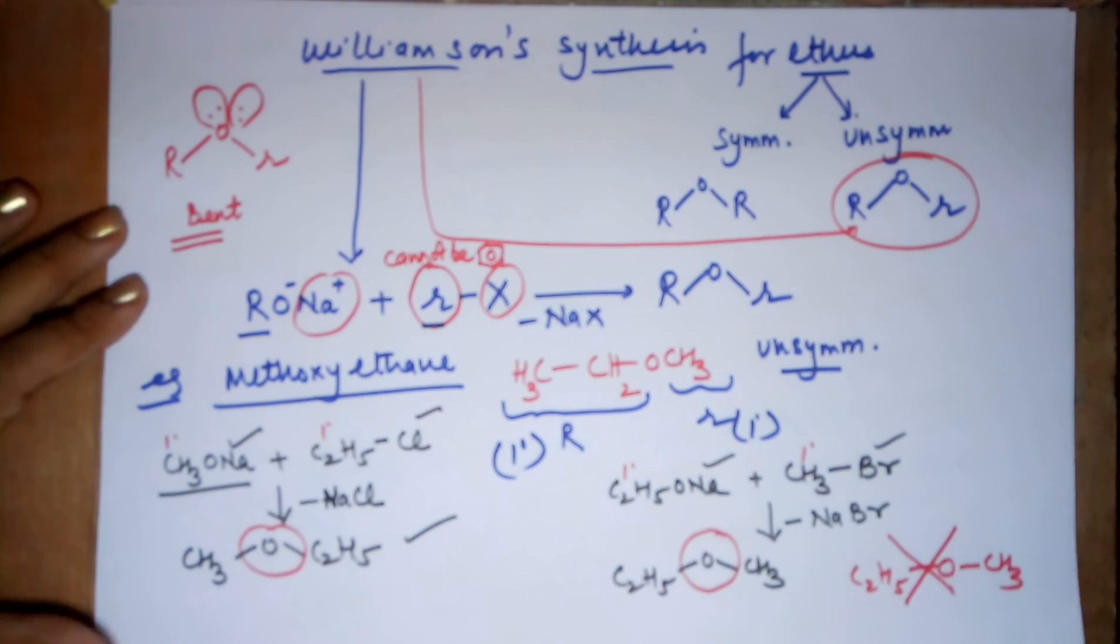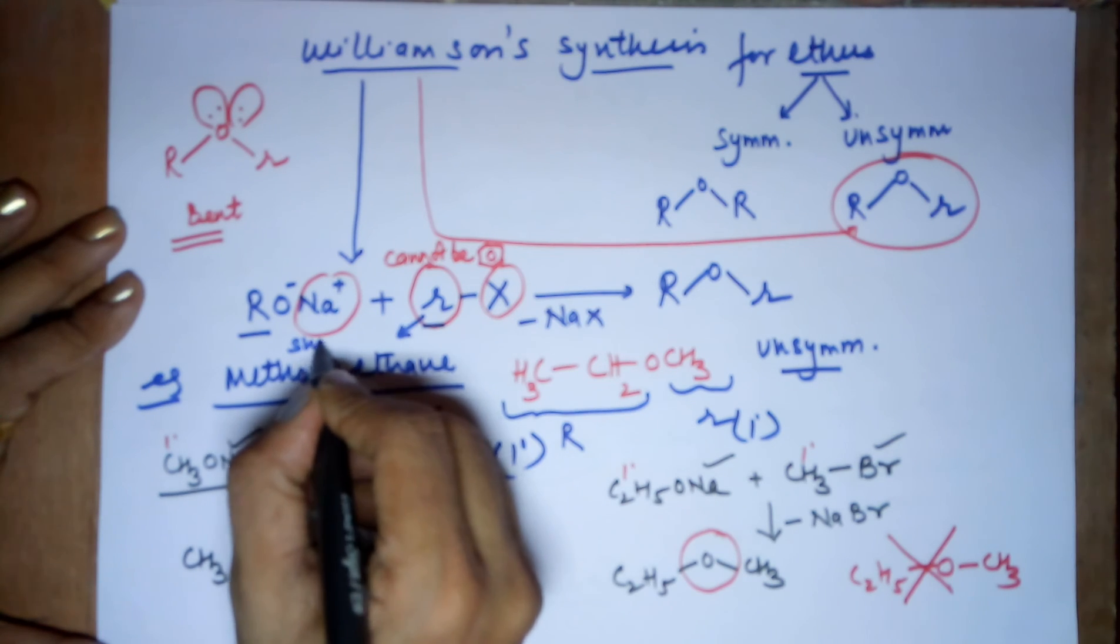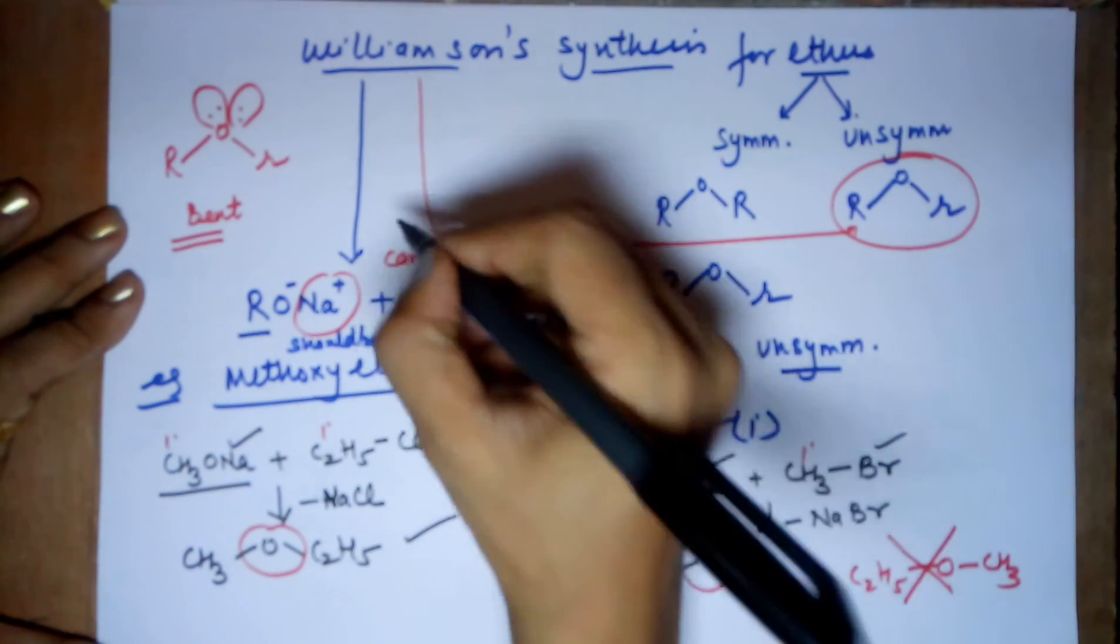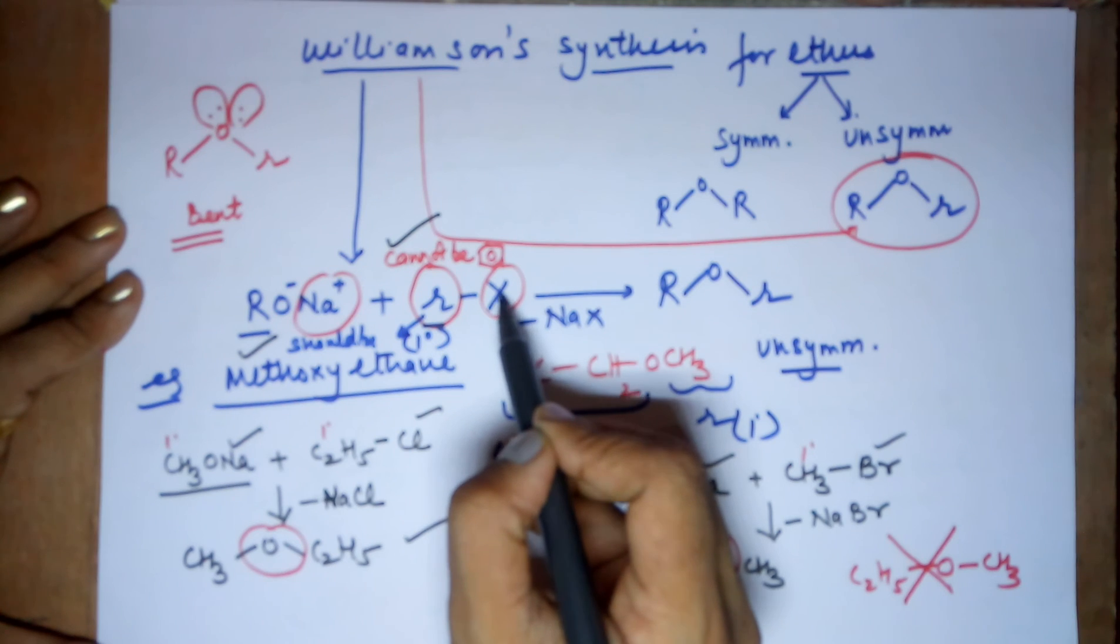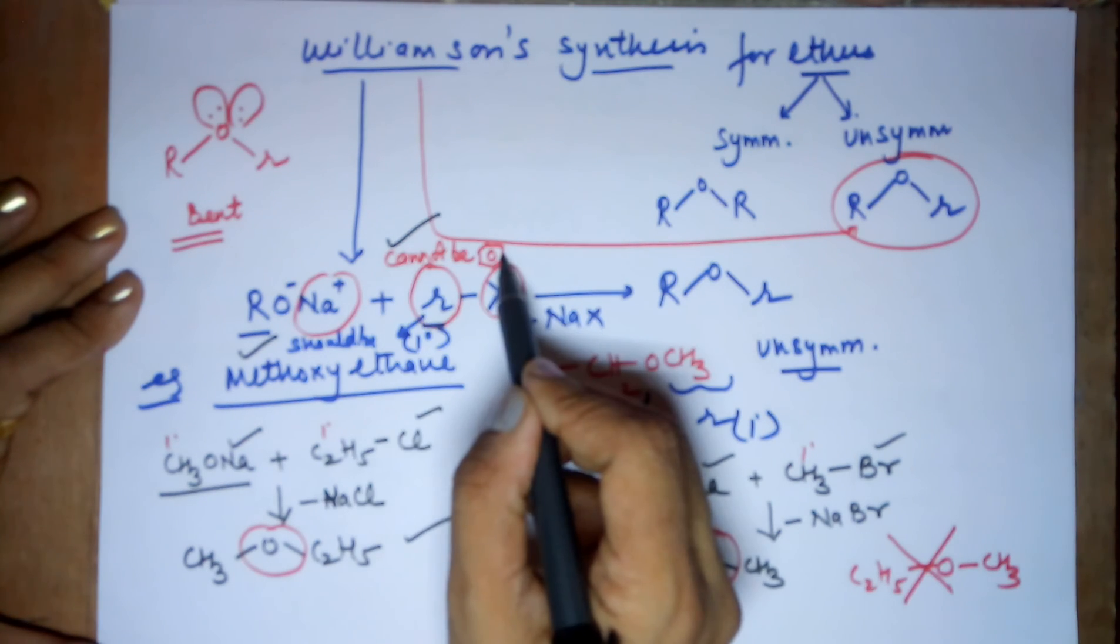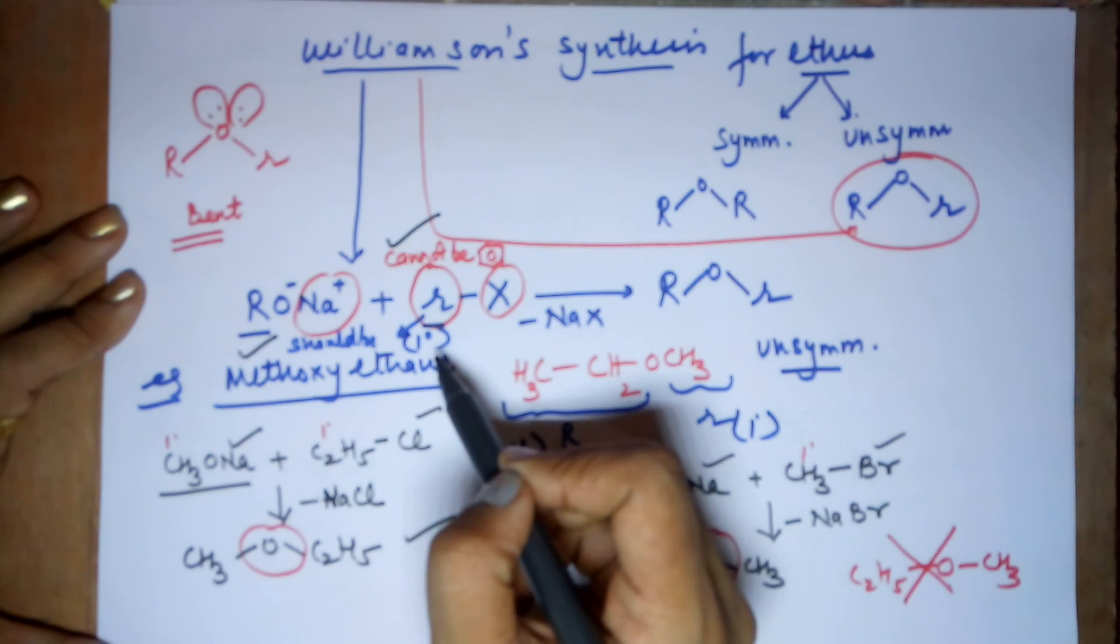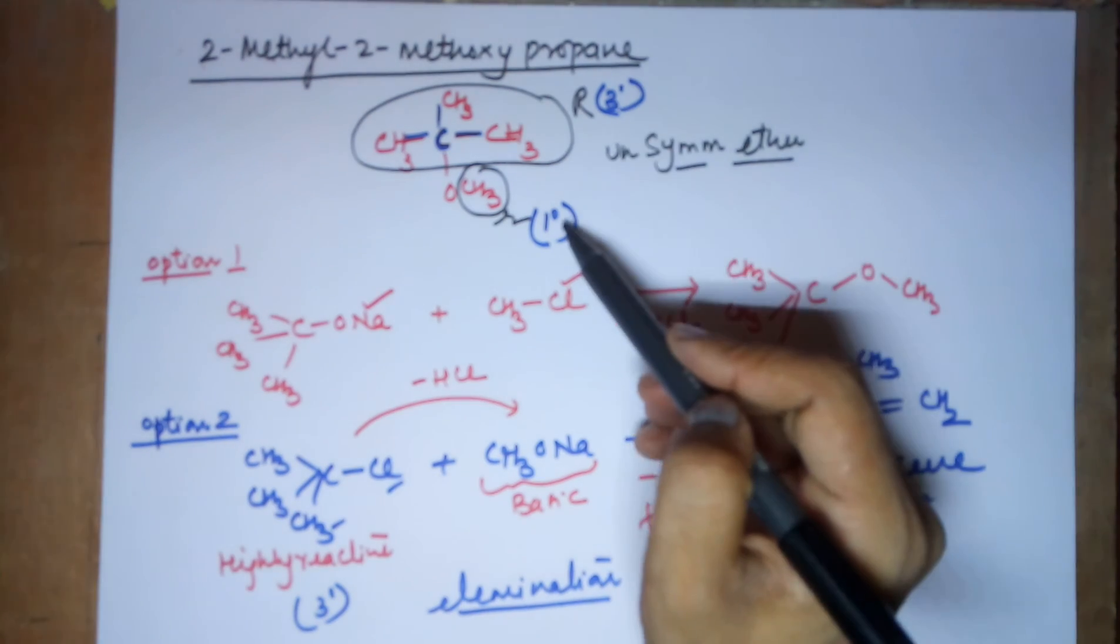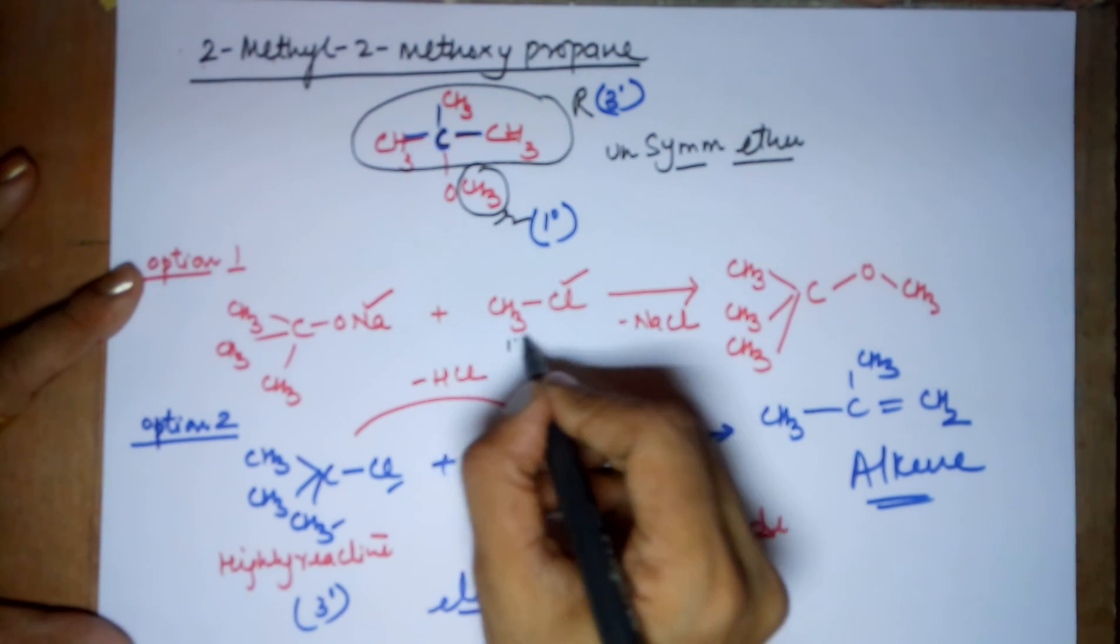Hence, your second limitation to the Williamson's synthesis becomes that this cannot be benzene was 1 and this should be 1 degree. So, these are the two important limitations of Williamson's synthesis. Your R-X, R cannot be benzene and R should be 1 degree if you have a choice that you have one as 1 degree, other as a 3 degree as we just did. You had one as 3 degree, one as 1 degree, then your halide should always be under the category of 1 degree.